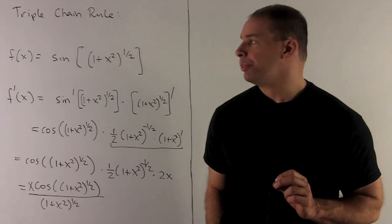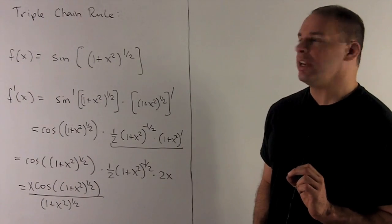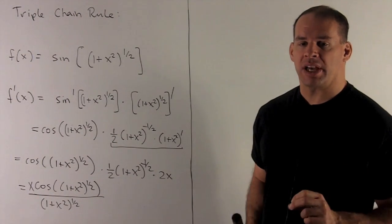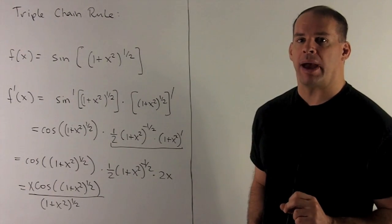Let's take a look at a triple chain rule. I'm going to use the function f of x equal to sine of 1 plus x squared raised to the 1 half power.